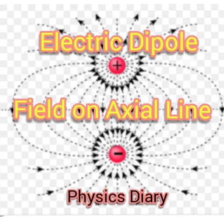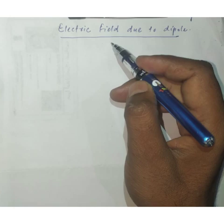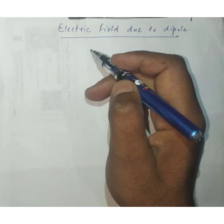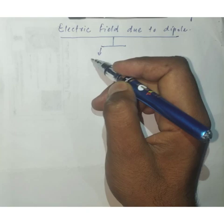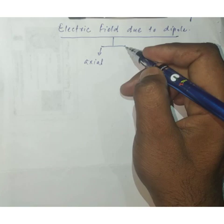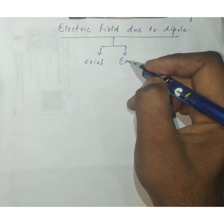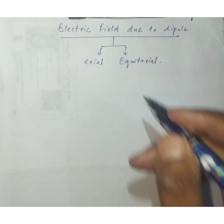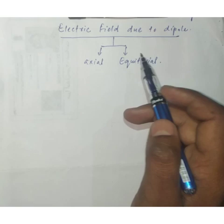Let's talk about the electric field due to a dipole. We want to find out the electric field due to a dipole, and it has two cases. One is we can find the electric field due to a dipole on the axial line, and another case is we can find the electric field due to a dipole on the equatorial line.